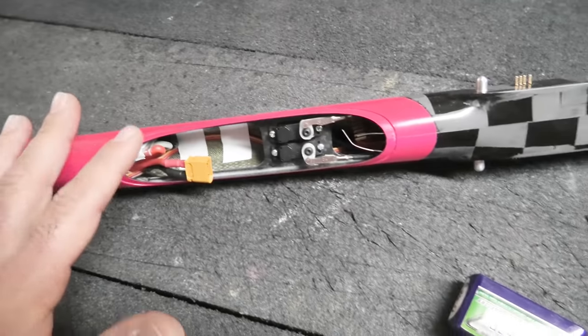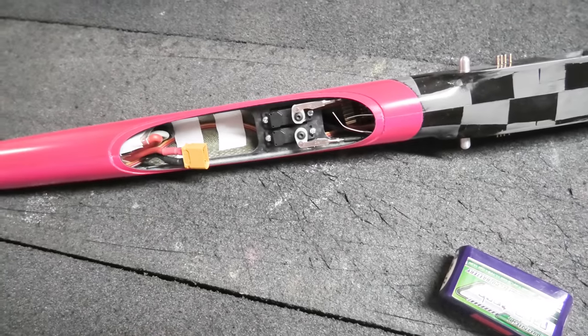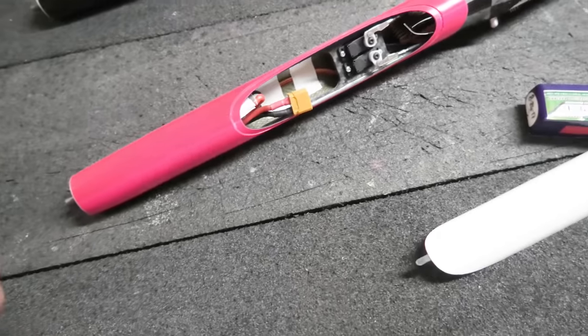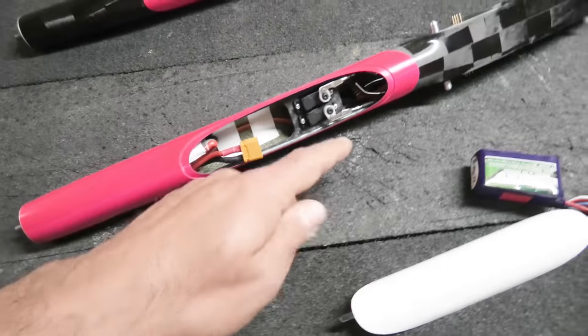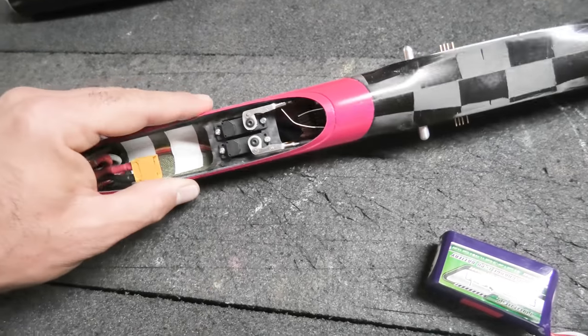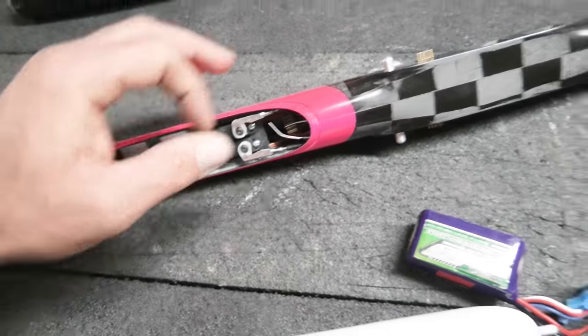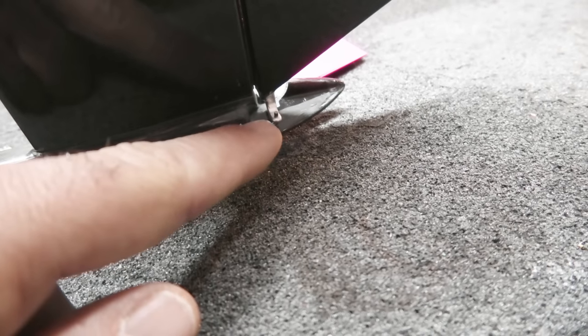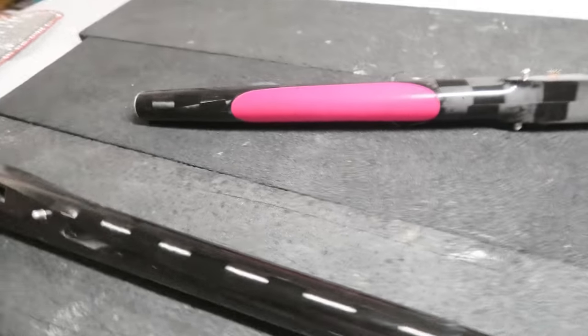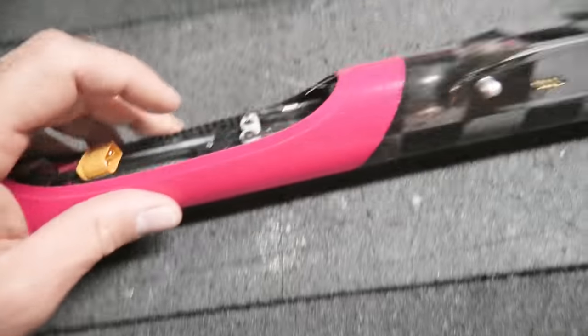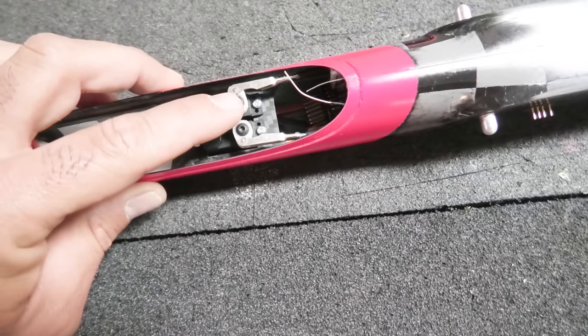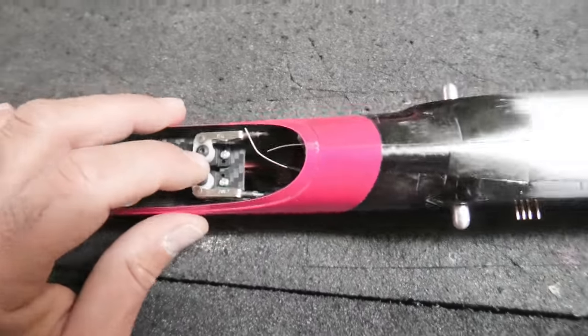So I think this short nose actually will help you get your CG closer and easier without putting weight in the tail or moving things around. So the install is really straightforward. Again, this is a V-tail. One thing to note is that the control horns back here on the V-tail are pretty short. So I used really small or really short servo arms, so you can see there.